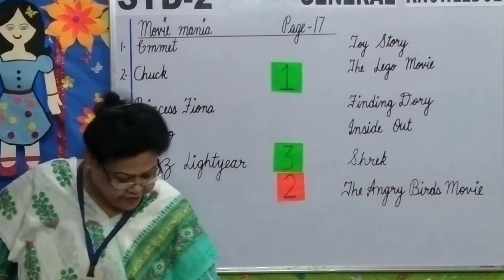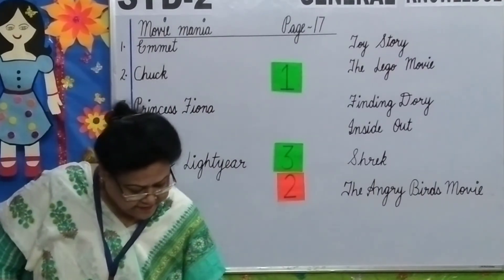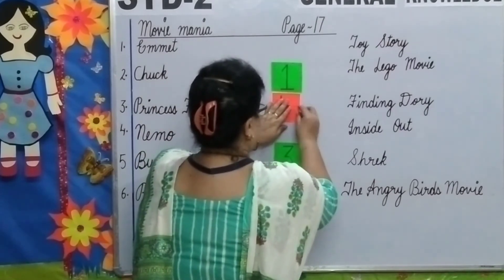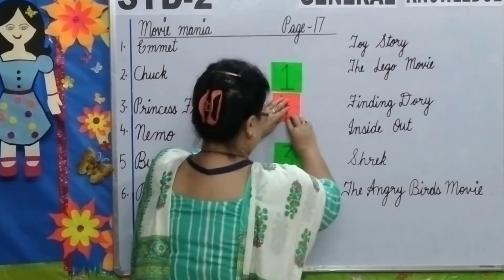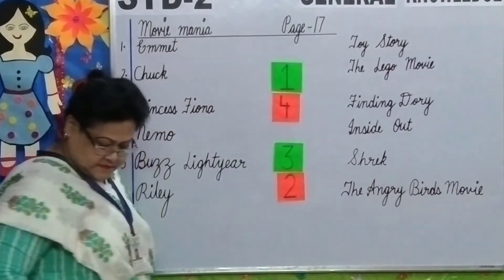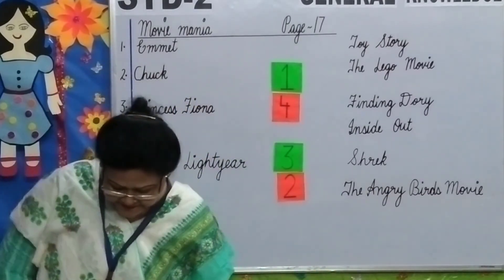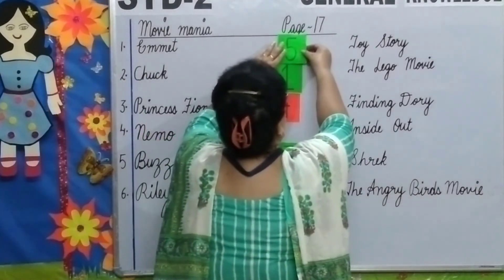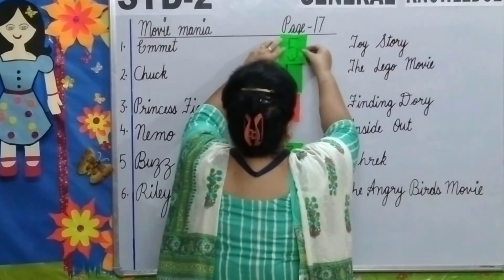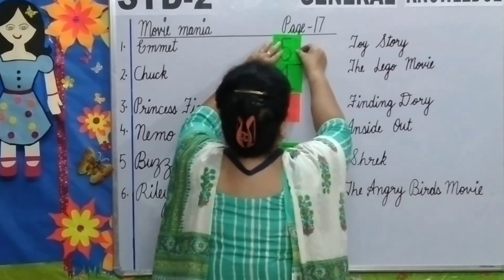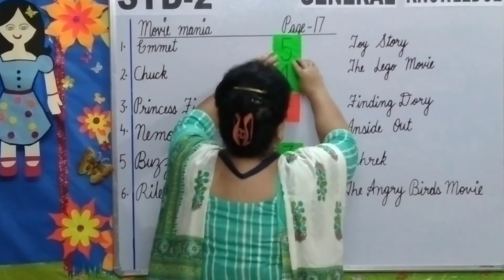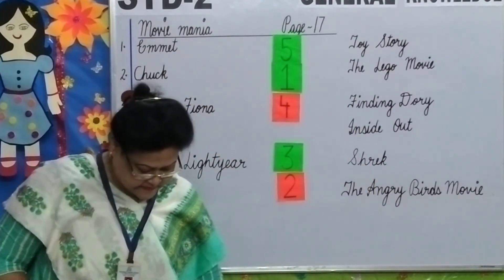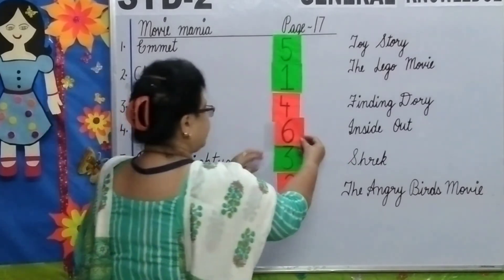Number four: Nemo — Finding Dory. Number five: Buzz Lightyear — Toy Story. Number six: Riley — Inside Out.